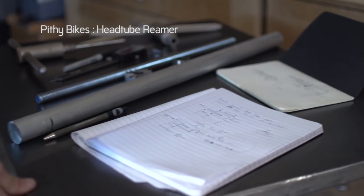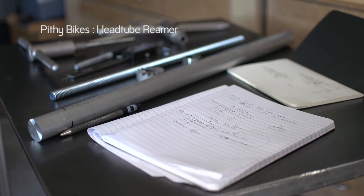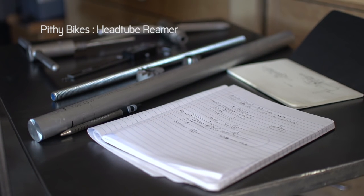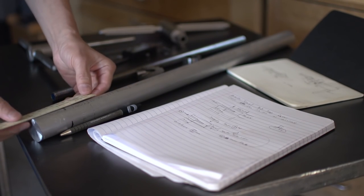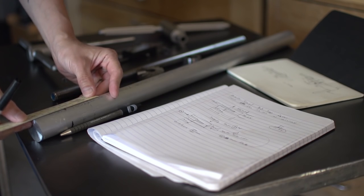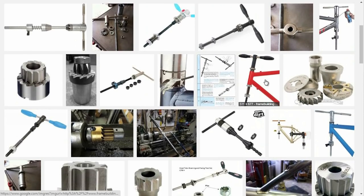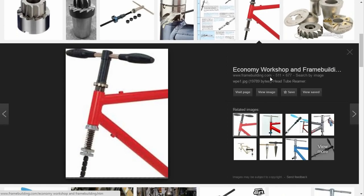In this video we will be making a head tube reamer. A head tube reamer is used to face and ream the head tube, also known as finishing. A Google search will bring up a bunch of pics like this. You can see that you stick this thing in a head tube as seen here. I decided to make one of these rather than buy one because I'm cheap. A tool like this new goes for around 500 bucks.